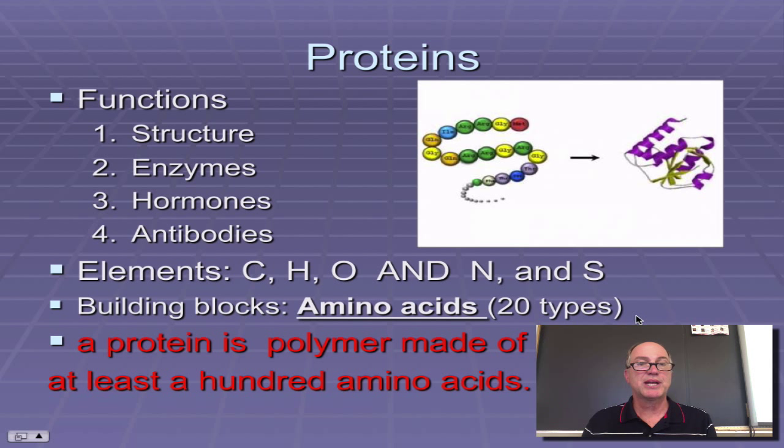The building blocks, you've probably heard of this, are amino acids. And it turns out there's 20 different types of amino acids, with names like glycine, arginine, methionine. And it turns out a protein is a huge macromolecule. A protein is a polymer that's made up of at least 100 amino acids bonded together. But one protein molecule is made of hundreds of those.